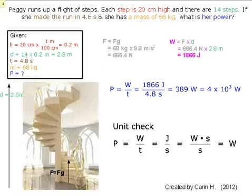Peggy runs up a flight of steps. Each step is 20 cm high, which is highlighted in red, which is the height of each step, and that comes out to 0.2 m from centimeters to meters.